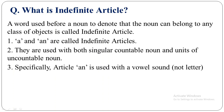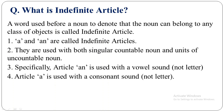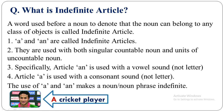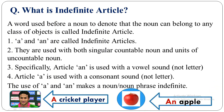Article AN is used with a vowel sound, not just a vowel letter. We must use AN before vowel sound, not simply before a vowel letter. Article A is used with a consonant sound, not a consonant letter. The use of A and AN makes a noun or noun phrase indefinite. For example, 'a cricket player' — here 'player' is a singular countable noun and 'cricket' starts with C which is a consonant sound, so we use A. On the other hand, 'an apple' — the first letter A is a vowel and the sound is also a vowel sound, so we write AN before apple.